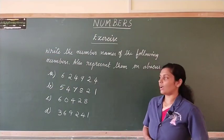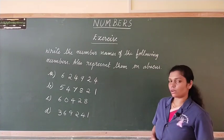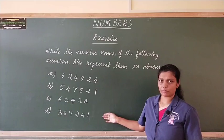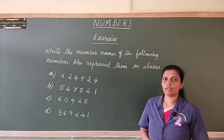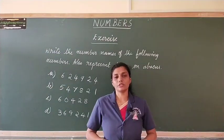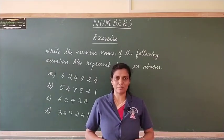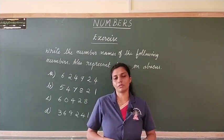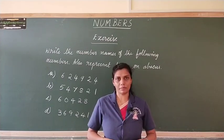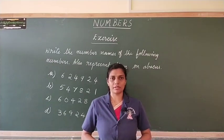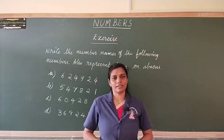Children, now I have a small exercise for you to work out yourself. You have to write the number names of these numbers and represent them on abacus. In today's class we learnt about 5 digit and 6 digit numbers, we also learnt how to write their number names and represent them on abacus. In our next class let us learn more about numbers. Until then take care, thank you.